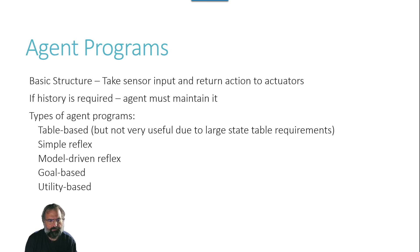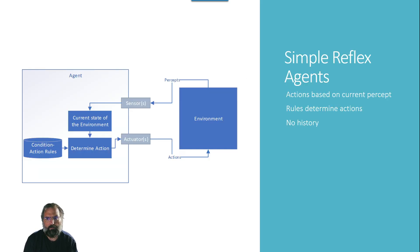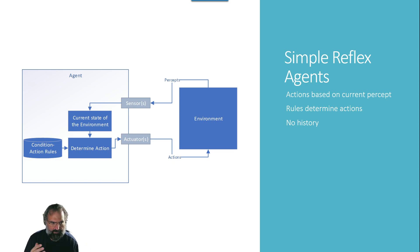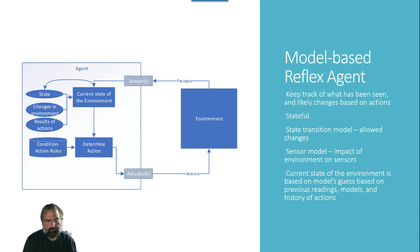A simple reflex agent means that actions are based upon the current percepts and the rules that determine the actions, with no history. You have an environment, a sensor reading it and receiving the percepts, a current state of the environment being maintained — that's the agent's view of it — which determines an action, and then realizes those actions based upon conditional action rules.